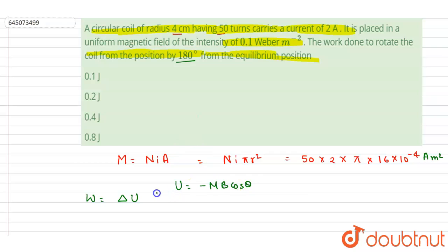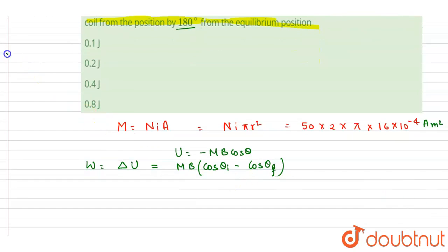We know that the potential energy expression is -MB cos θ. Since the theta is changing, I will write down the change in potential energy is MB(cos θ_initial minus cos θ_final), because the negative sign is here so we write initial minus final.